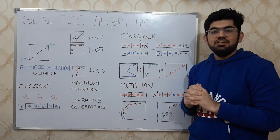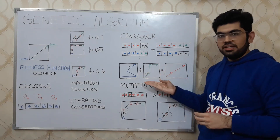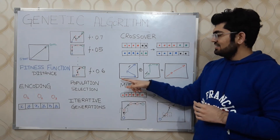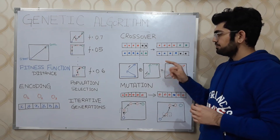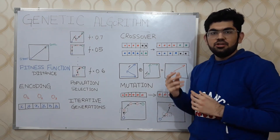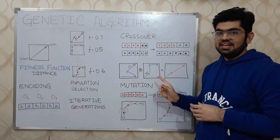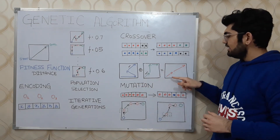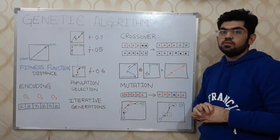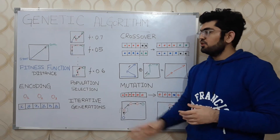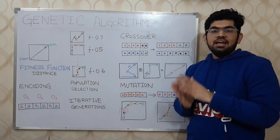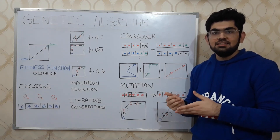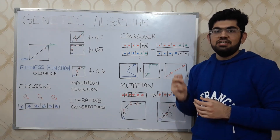For our navigation problem, we can pose crossover as something like this. Assuming we have two different paths that take us to the goal — one is the blue one and the other is the green one. Assuming that during crossover this vector and this vector were selected, combining the vectors of these two parents, we get a new individual that looks like this red path. It is highly likely that the individuals in the next generation are also going to have increased or better fitness function values.